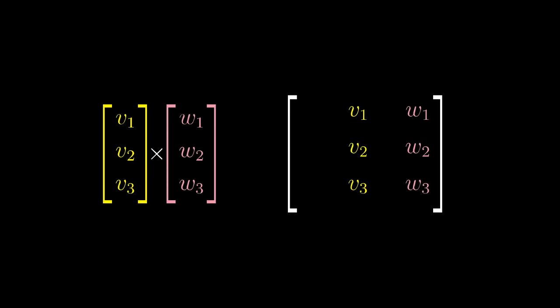But for that first column, you write the basis vectors i hat, j hat, and k hat. Then you compute the determinant of this matrix.